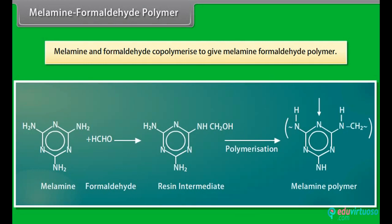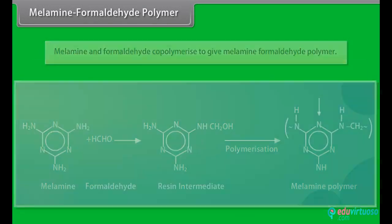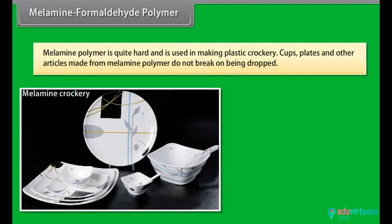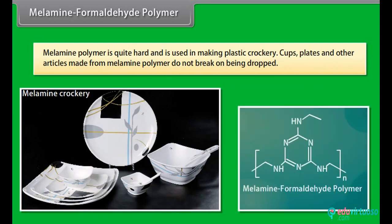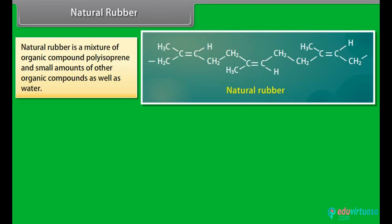Melamine formaldehyde polymer: melamine and formaldehyde co-polymerize to give melamine formaldehyde polymer. Melamine polymer is quite hard and is used in making plastic crockery, cups and plates. Articles made from melamine polymer do not break on being dropped.